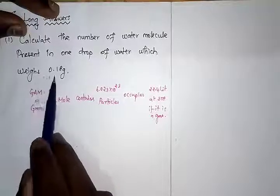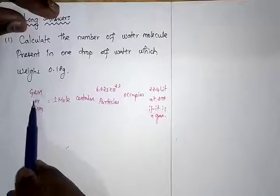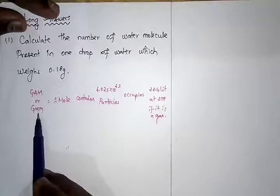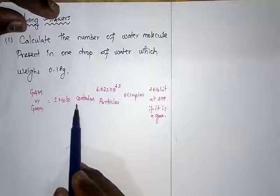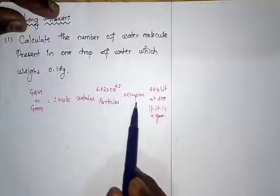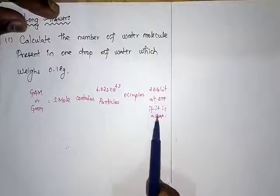The given detail is the grams of water, that means the weight of water is given. So what we know is the idea that gram atomic mass or gram molecular mass of a substance is equal to 1 mole, which contains 6.023 × 10^23 particles, which occupies 22.4 liters at STP if it is a gas.